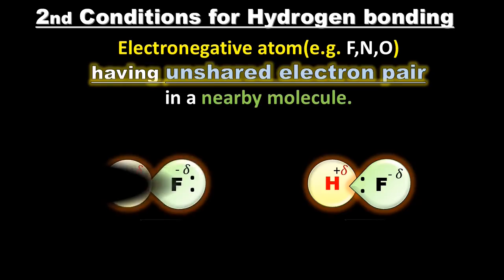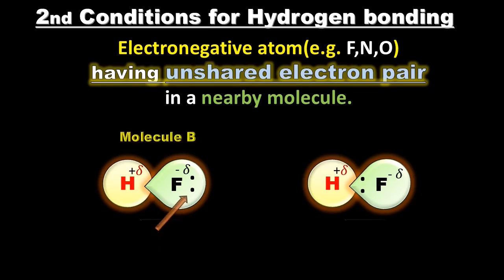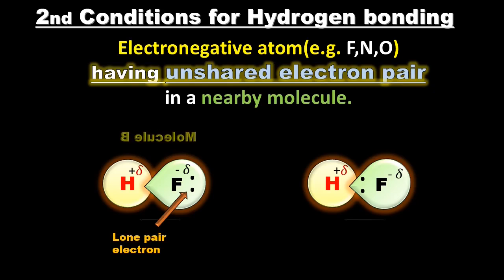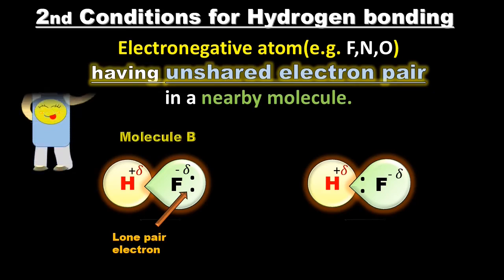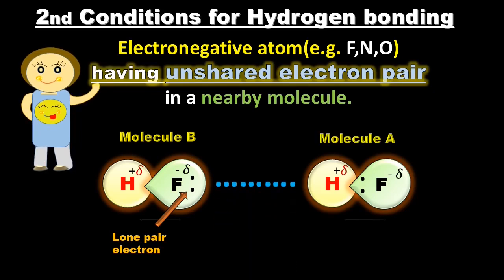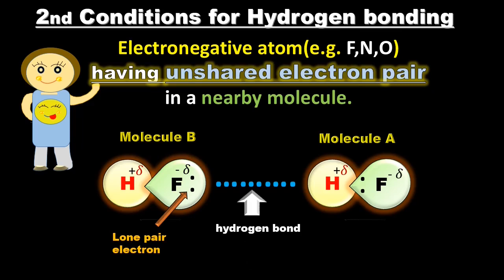Hydrogen bonding की definition का second portion हमें बताता है कि जो दूसरा atom hydrogen bonding में involve होगा, वो ऐसा molecule होना चाहिए जिसमें highly electronegative atom हो। Highly electronegative atom means ऐसा atom जिसकी electron pair को अपनी तरफ pull करने की capability ज़्यादा हो — for example, fluorine, nitrogen या oxygen जिनकी electron pulling tendency काफी ज़्यादा होती है, इसीलिए इनको highly electronegative atoms कहा जाता है और इसी वज़ा से इन पर partial negative charge भी होता है।